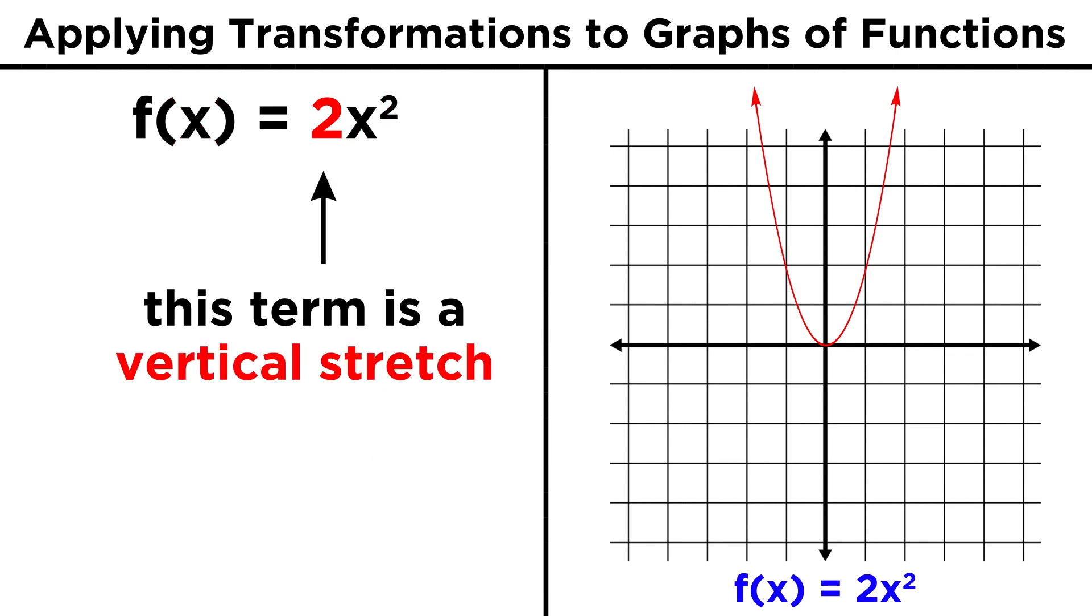Whatever this coefficient is, we stretch by that factor. If this coefficient is less than one, it will shrink in the opposite direction. Let's say this term is one half, then the parabola becomes twice as wide as x squared, because it grows at half the rate.